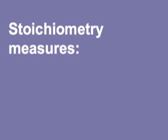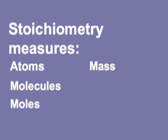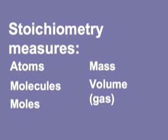Let's look at what stoichiometry actually measures. This is all in relationship to a balanced equation, a reaction. You're talking about atoms, the number of molecules, the number of moles or the amount of a substance — product or reactant — the mass, usually in grams, and when working with gas laws, the volume of a gas. Everything in stoichiometry depends on having a balanced chemical equation. You've got to have that to convert any unit of reactant to product, or vice versa.